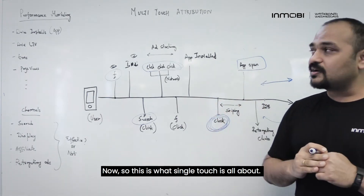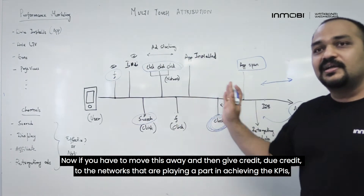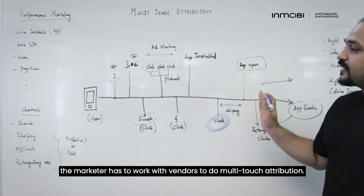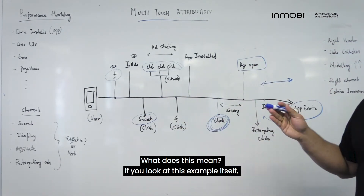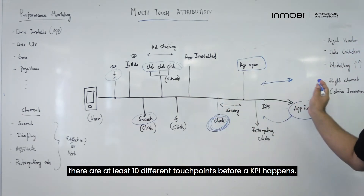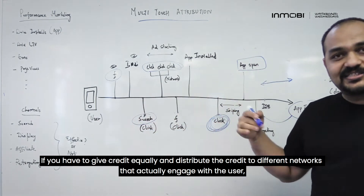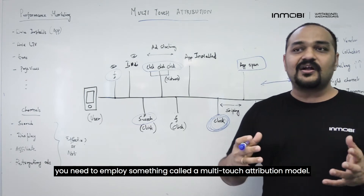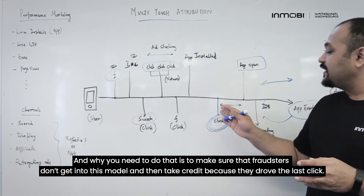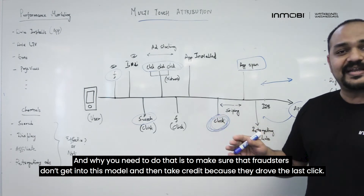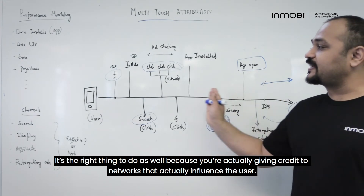So that is what single-touch attribution is all about. Now, if you want to move away from that and give due credit to the networks that are playing a part in achieving the KPIs, the marketer has to work with vendors to do multi-touch attribution. If you look at this example, there are at least 10 different touch points before any KPI happens. If you have to give credit equally and distribute it to different networks that actually engage with the user, you need to employ a multi-touch attribution model. This also ensures that fraudsters don't take credit simply because they drove the last click. It's the right thing to do because you are giving credit to networks that actually influence the user.